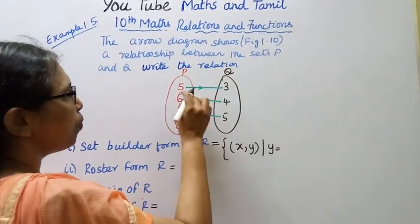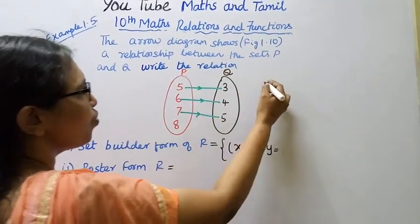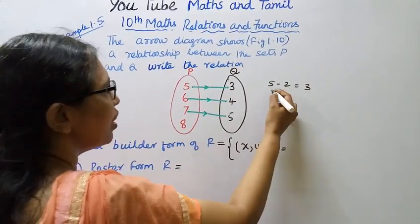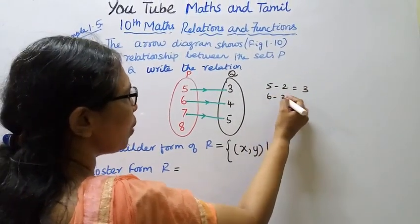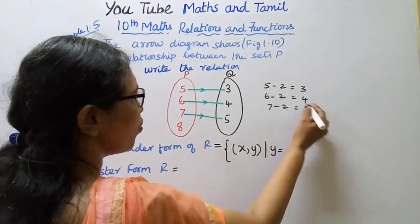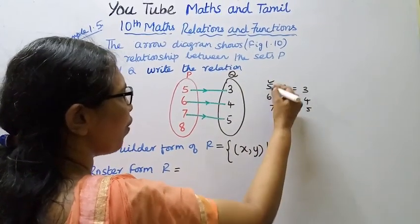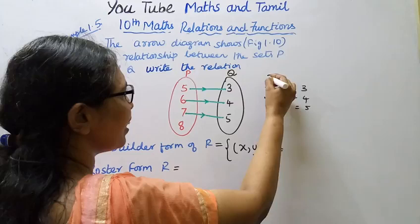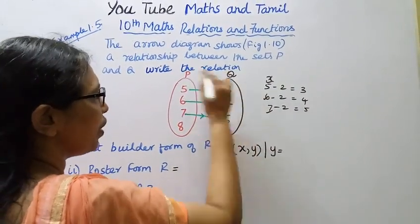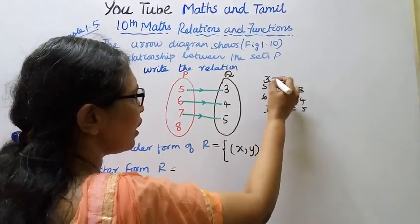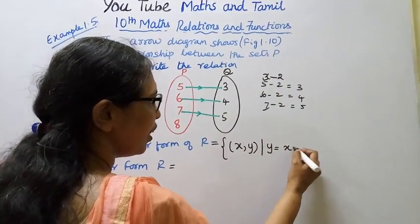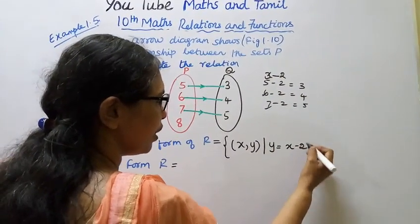Y is 5. 5 minus 2 is 3. 6 minus 2 is 4. 7 minus 2 is 5. So X belongs to P and Y equals X minus 2.